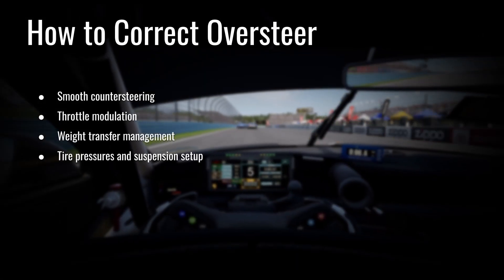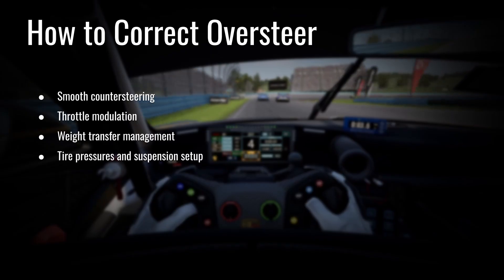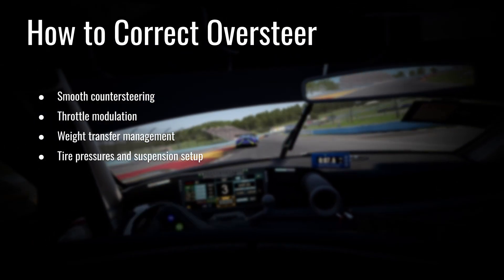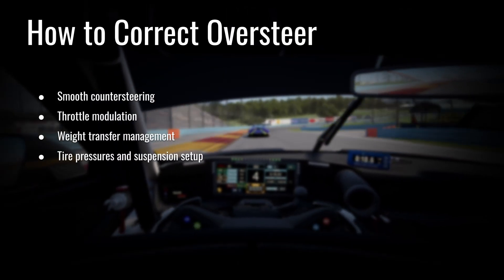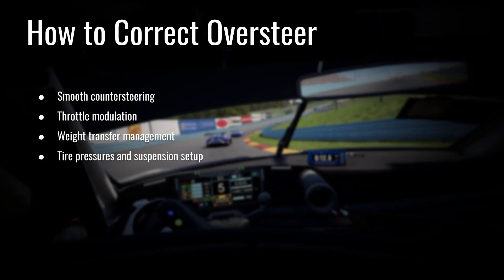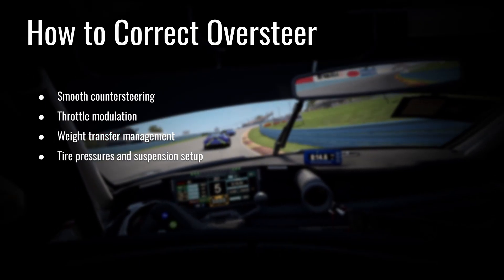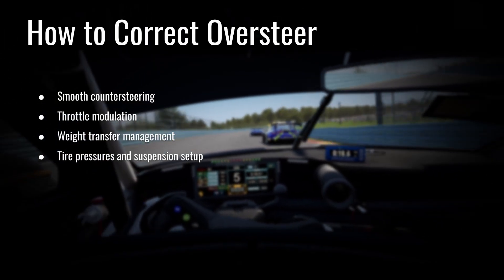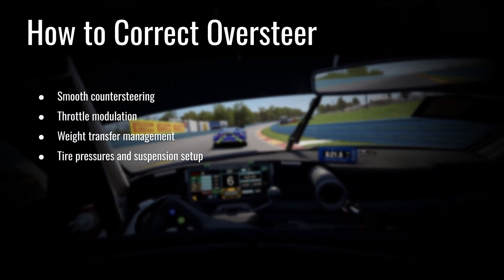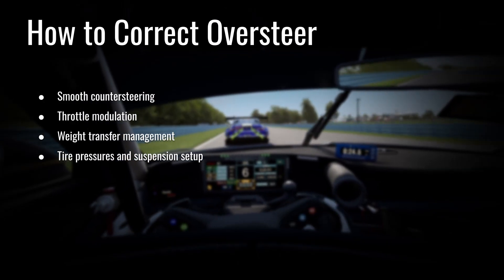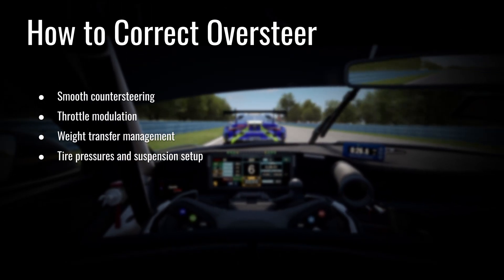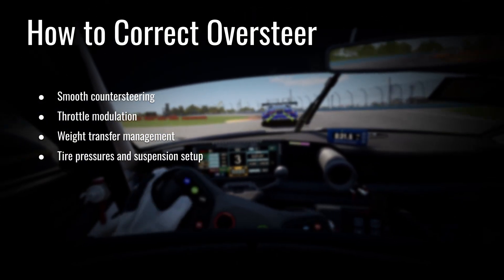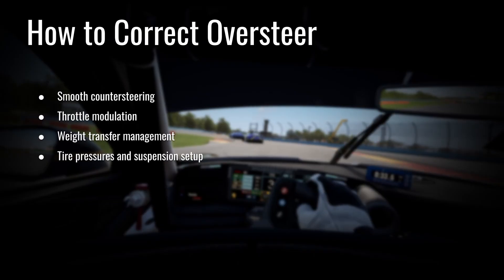The first thing to do if you encounter oversteer is to apply smooth counter steering. That typically means moving your wheel toward a more neutral, straight position. What that does is start to bring the weight in the rear back toward both tires, as opposed to the one tire that's being overloaded. Let's see an example of that in action.